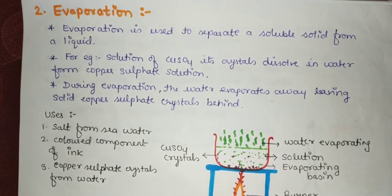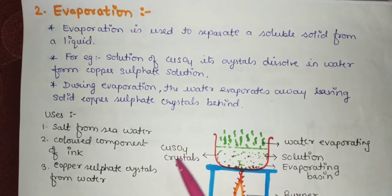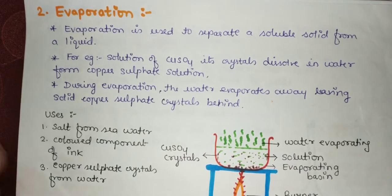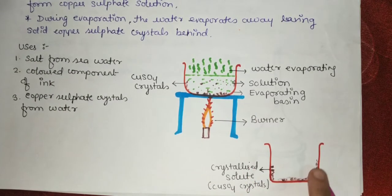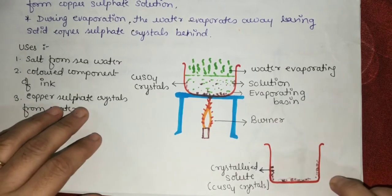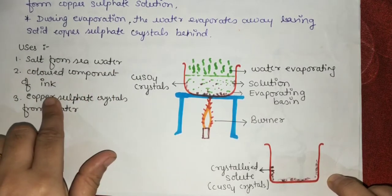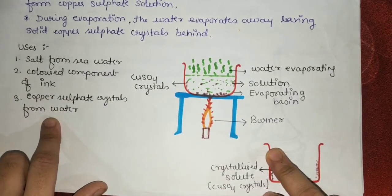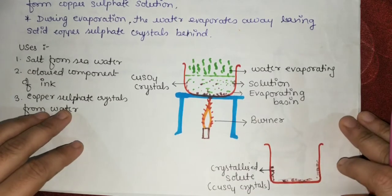As you can see in the diagram, we take an evaporating basin and add copper sulfate solution. When we start the heating process, the water starts to evaporate, leaving behind the copper sulfate crystals at the bottom. After drying, you can collect these copper sulfate crystals. In this way, the evaporation method helps us separate salt from seawater, colored components in ink, or copper sulfate crystals from water.